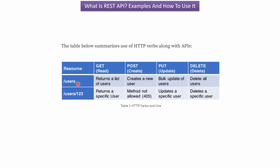Here you can see the URIs slash users and slash users slash 123, along with the HTTP methods GET, POST, PUT, and DELETE. Using slash users with GET returns a list of users. Using slash users with POST creates a new user. Using slash users with PUT performs a bulk update of users. And using slash users with DELETE deletes all users.